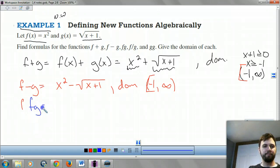Let's do fg. Then we're going to take our x squared and times it by our square root of x plus 1. Can't distribute that through. Now our domain is going to be the same. Nothing too scary yet.